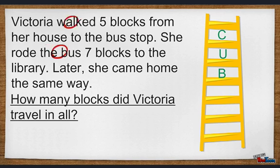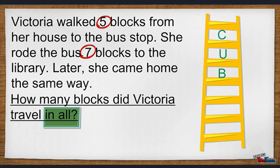Now we are at the letter B, which stands for box. Our next step is to box any math action words. When we look at the problem, we see that Victoria walked five blocks and rode seven blocks to the library and the same distance back home. The question asks how many blocks did she travel in all. So I'm going to box the words 'in all' because it tells me that I need to add.